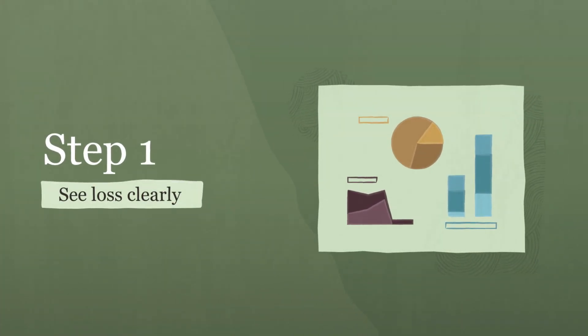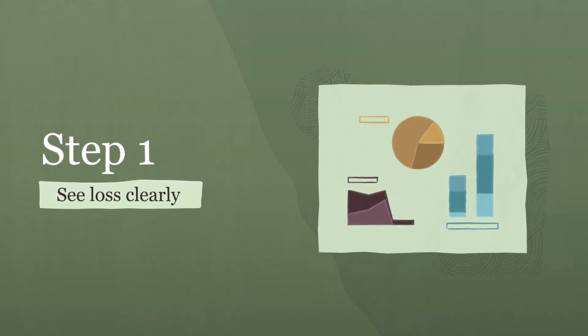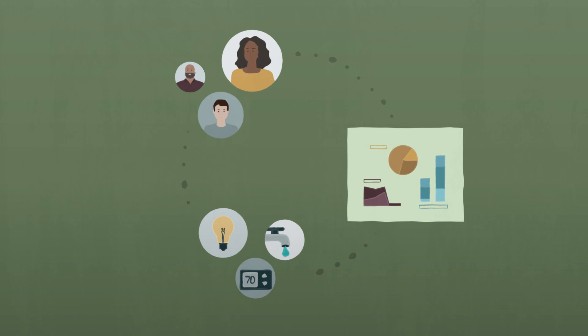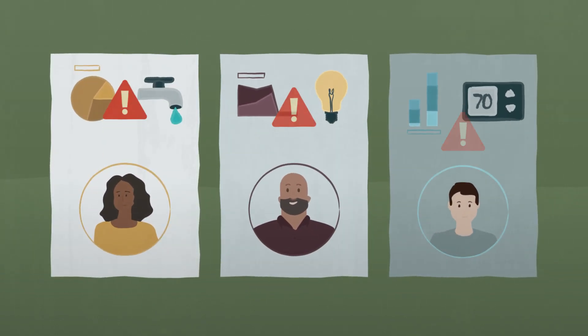See loss clearly. Oracle Utilities' customer and metering solutions connect the dots between usage, device, and customer data to help utilities spot potential loss events.